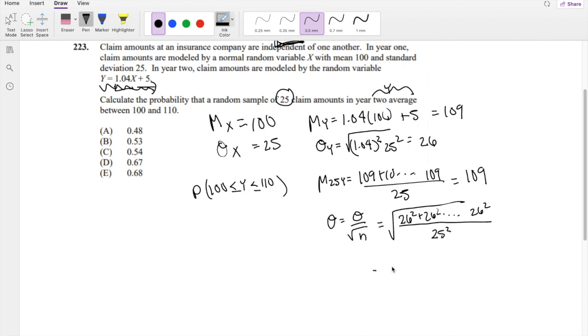But because we're adding 26 squared, 25 times, we can actually factor out the 26 squared, and you get 25 out, over 25 squared. So the 25's cancel out, and you get square root of 26 squared over 25, which is exactly 26 over square root of 25, which is 26 over 5, which is 5.2.